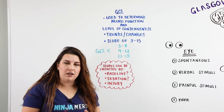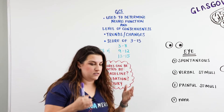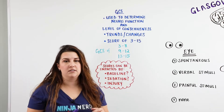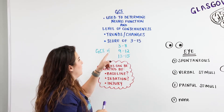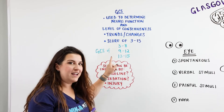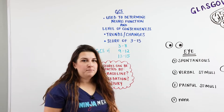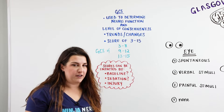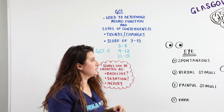When you get report, you're going to look at your patient and see if their GCS matches what you were told. This is very important because you're hoping to see an improvement in GCS and not a decline. If you do see a decline in a patient, you want to make sure you tell the provider so they can give the patient the appropriate interventions.